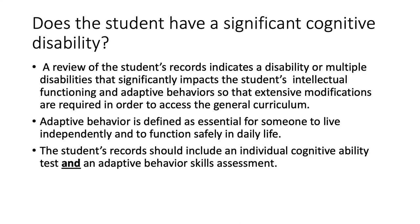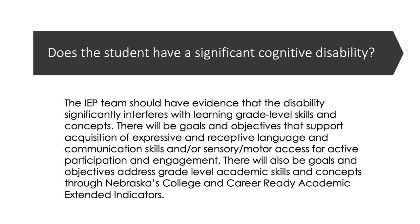Adaptive behavior is defined as essential for someone to live independently and to function safely in daily life. The student's records should include an individual cognitive ability test and an adaptive behavior skills assessment. What other evidence should the team look at to determine if the student has a significant cognitive disability?